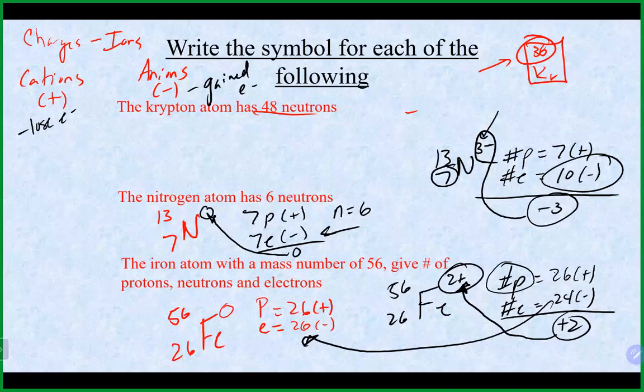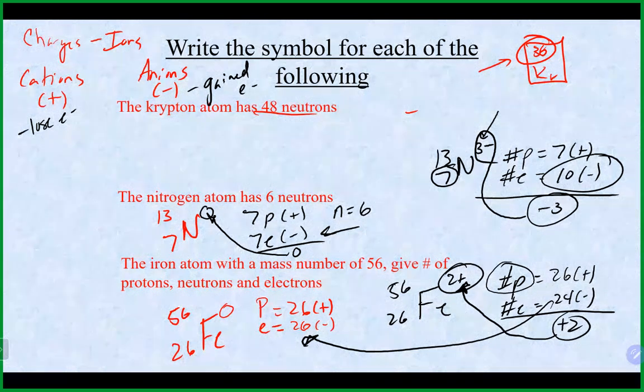Anions and cations: typically, metals lose electrons and become cations, while nonmetals gain electrons and become anions. The only things that affect charge in an atom are protons (positively charged) and electrons (negatively charged) — neutrons are neutral and don't affect the charge at all. Because the atomic number for nitrogen is 7, nitrogen must always have 7 protons; that cannot change.